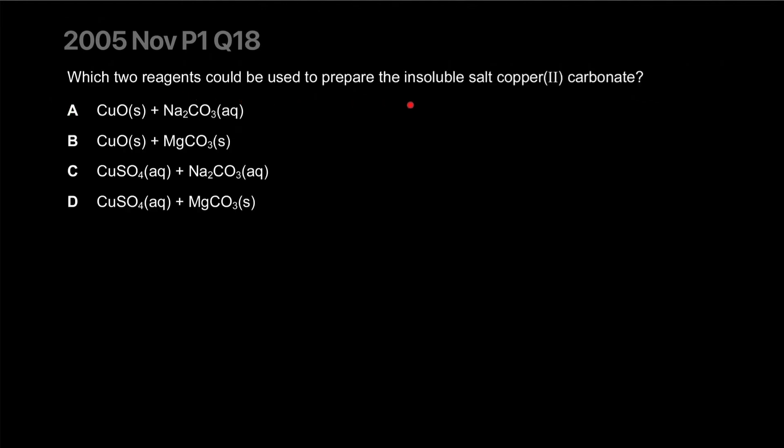Which two reagents could be used to prepare insoluble salts, copper carbonate? Now if you want to produce copper carbonate, it's insoluble. The easy way to do it is get copper from a salt that is soluble. So you get the copper ion from a salt that is soluble. So essentially copper aqueous. You get the carbonate ion from a salt that is soluble. So how would you know they're soluble? Well if they're aqueous, they're soluble. So both need to be aqueous and the product they're already telling you is insoluble. The answer is C. Very easy.